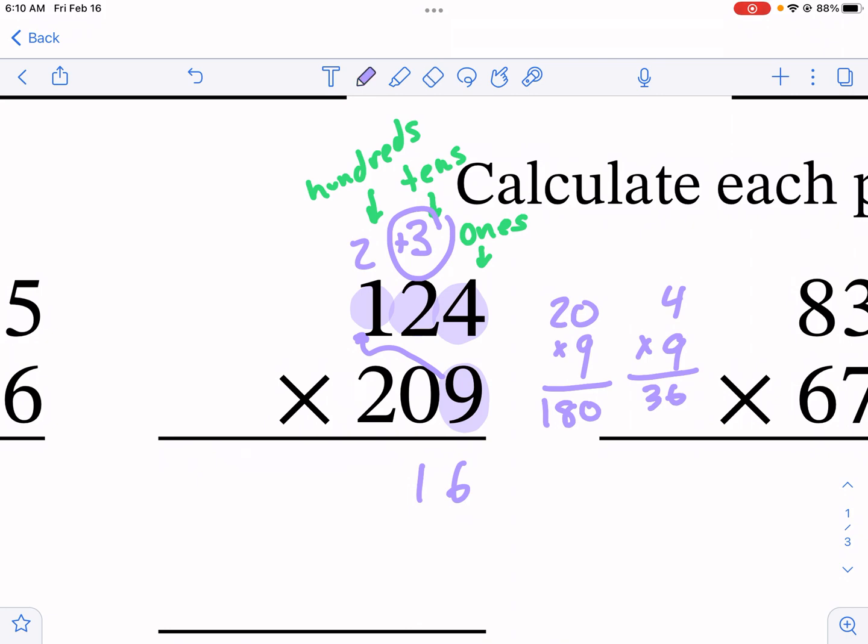So I carry over that two and now I have nine times one, which is nine plus that two and I get 11. So now I have a thousand. So I have 1116.